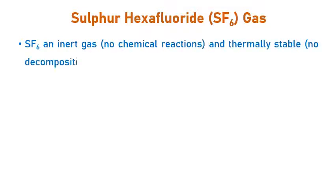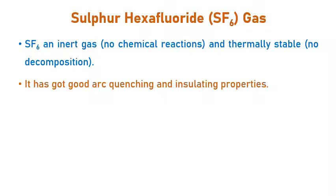SF6 is an inert and thermally stable gas. When I say inert, it means there is no chemical reaction that will occur. Unlike mineral oil discussed in the previous video on oil circuit breakers, where carbon particles are produced when oil quenches the arc, there are no such chemical reactions with SF6 gas. Thermally stable means there is no decomposition that can occur in SF6 gas. The main property of SF6 gas is that it has good arc quenching and insulating properties.